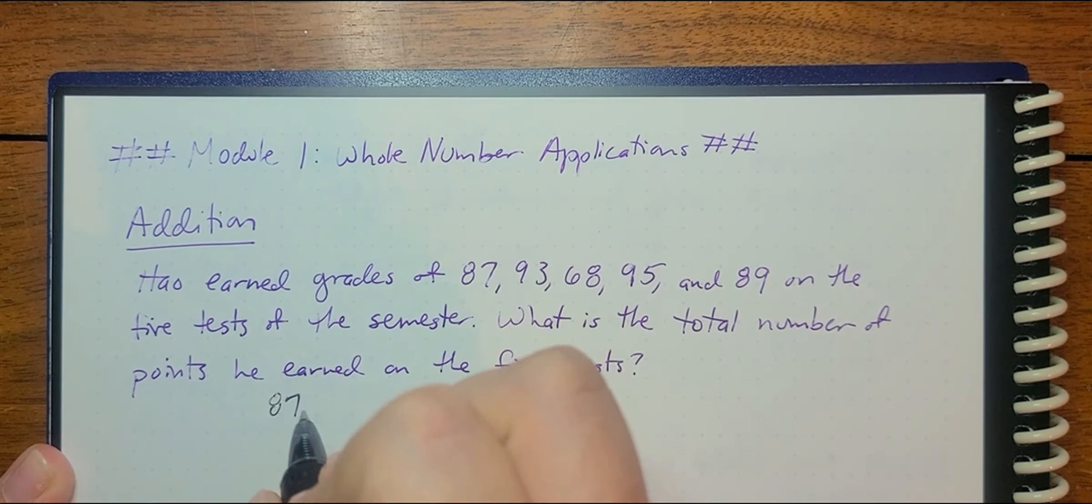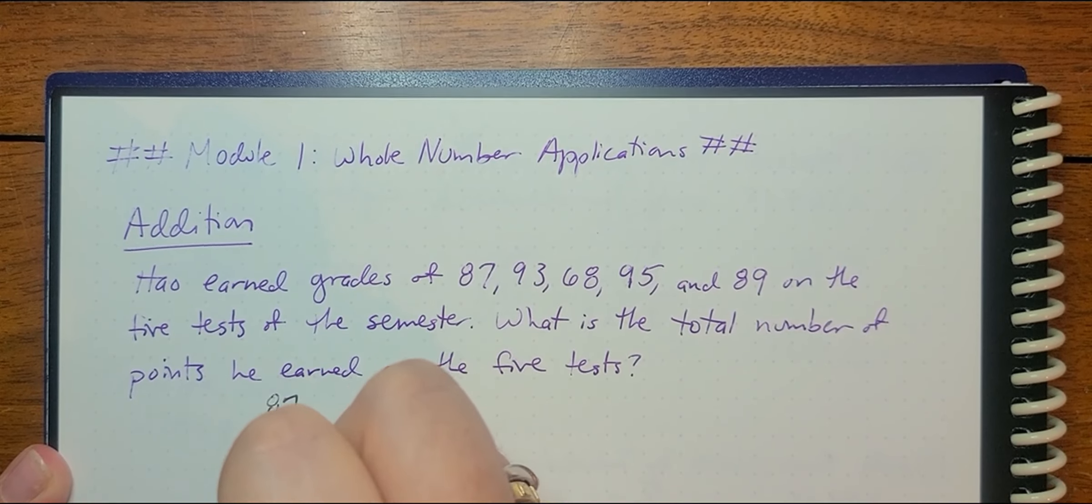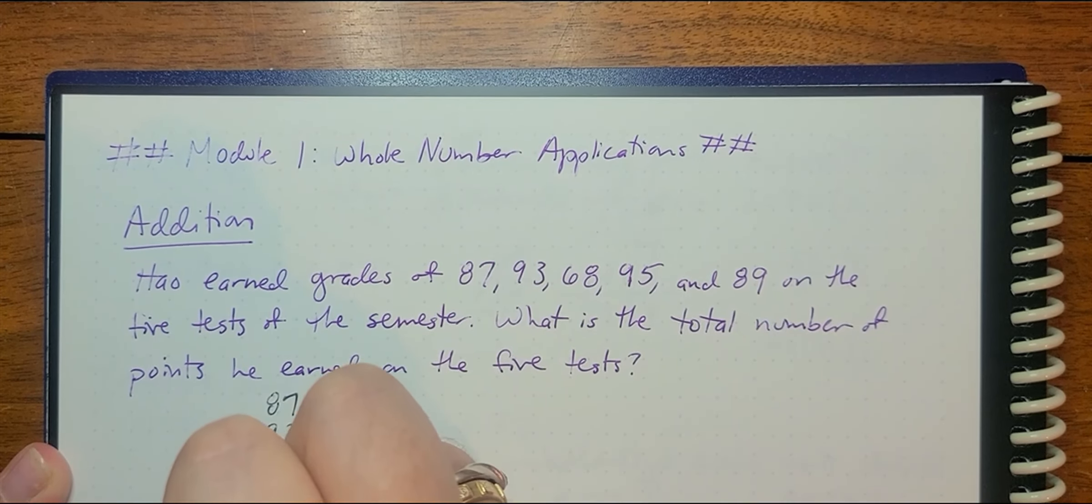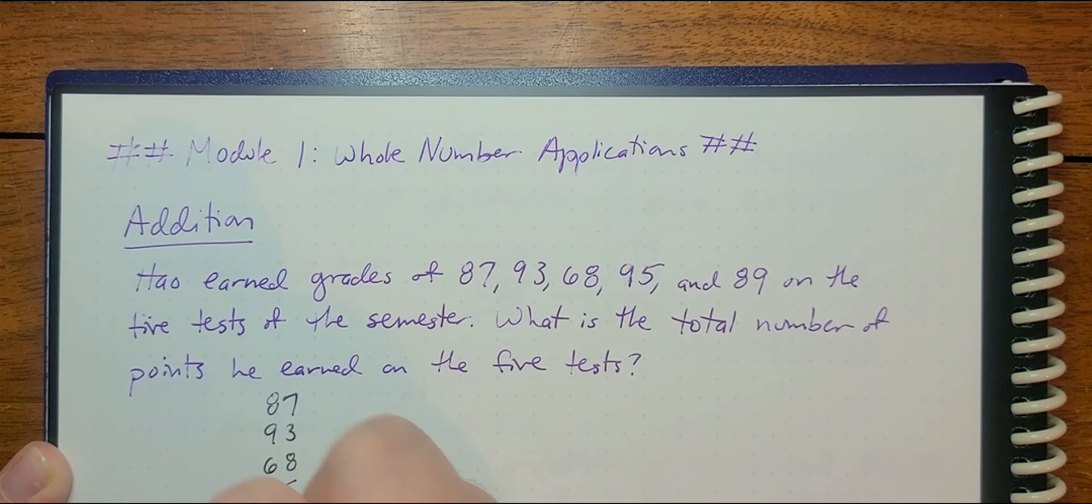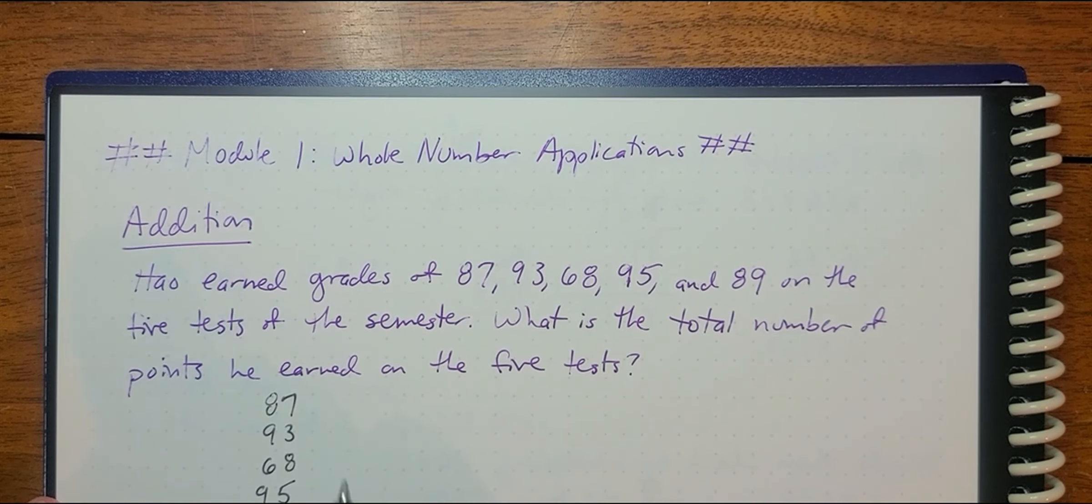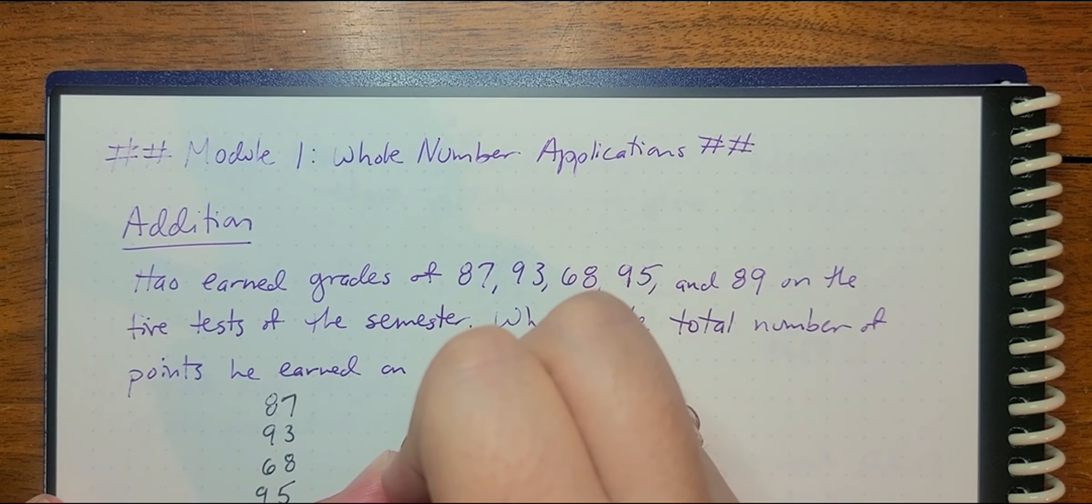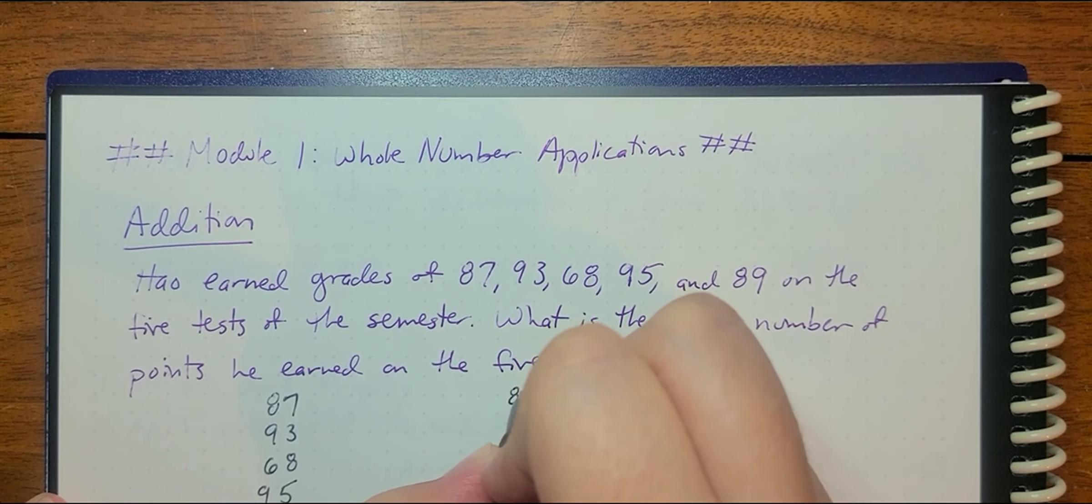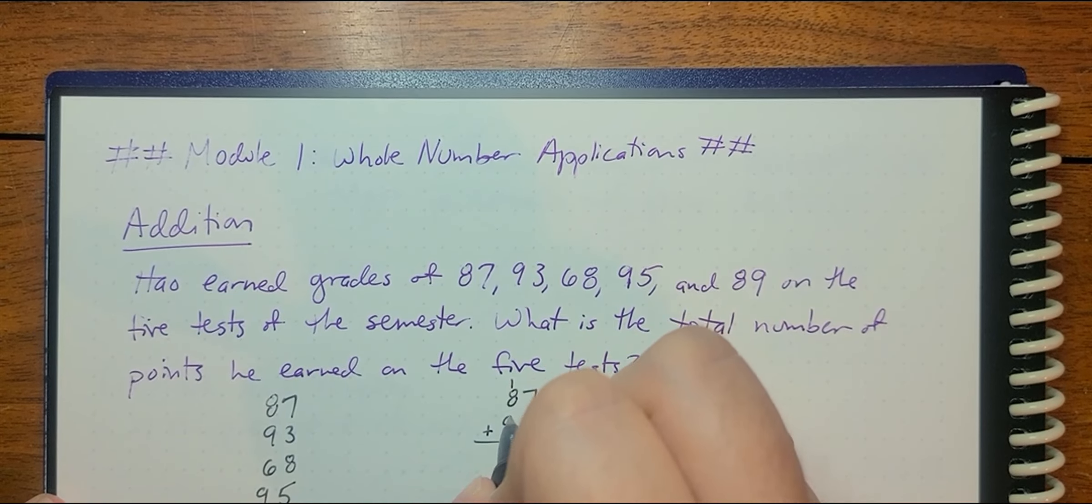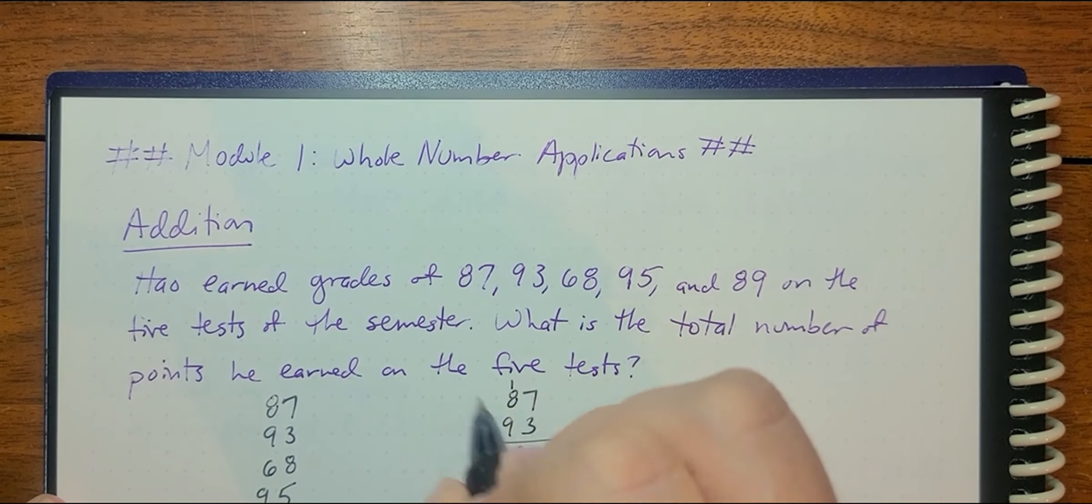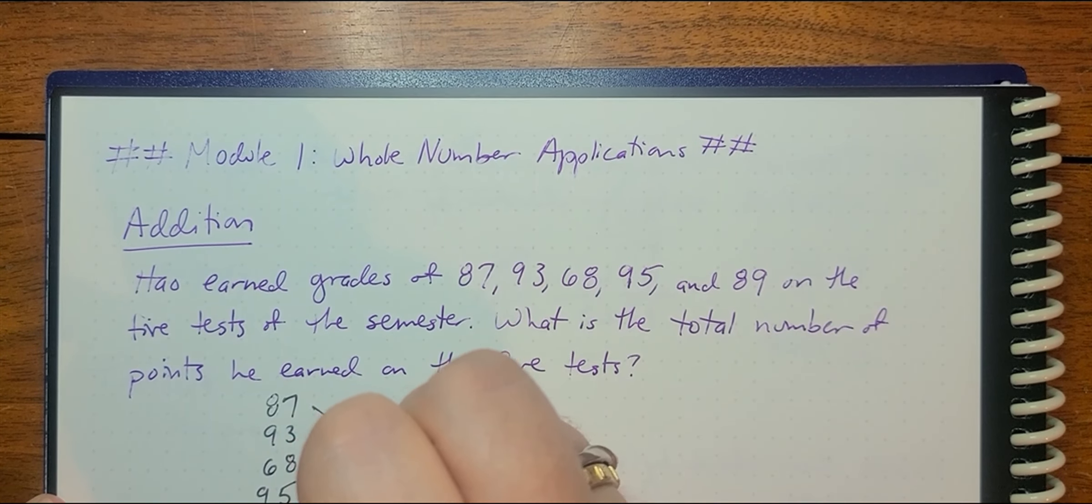So I'm going to take 87 plus 93 plus 68 plus 95 plus 89. Now something that I like to do actually is to break these out. So I might do like 87 plus 93 separately. So that's going to give me 180.